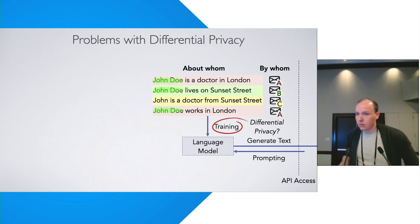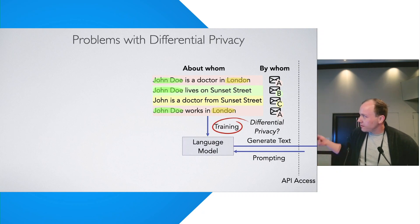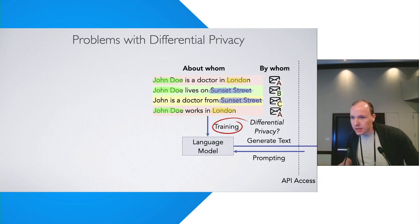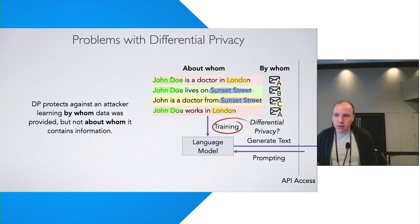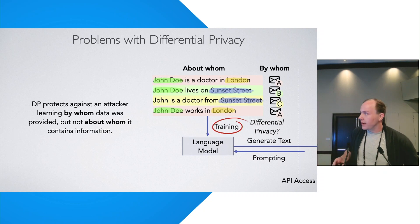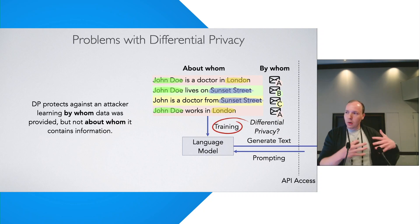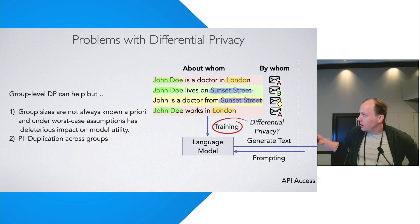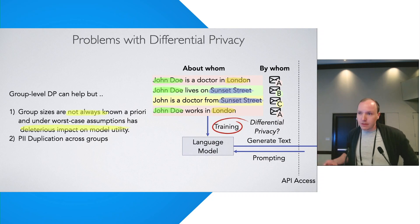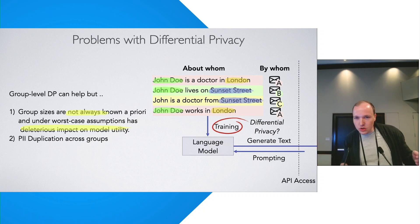There's a fundamental problem: in record-level DP, we have duplication across records of PII. Differential privacy only protects by whom a data record was provided, but not about whom it contains information. So there's a mismatch between what is differentially private and what's colloquially known as private. You can mitigate this with group-level differential privacy, zooming out from individual records to groups — but then how do we choose group sizes?